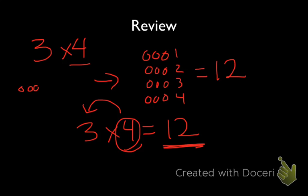We can call this scaling, where the final product, 12, is going to be scaled 4 times from 3, or 3 is going to be 4 times as big. 3 is going to be scaled 4 times to make a final product of 12.